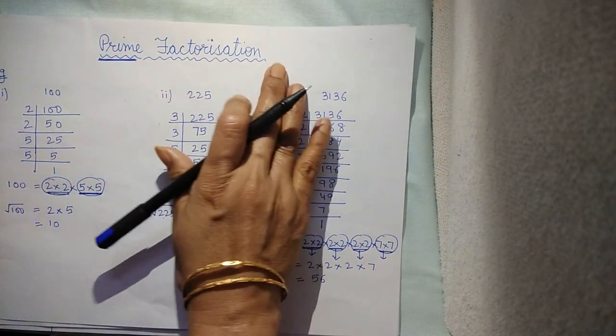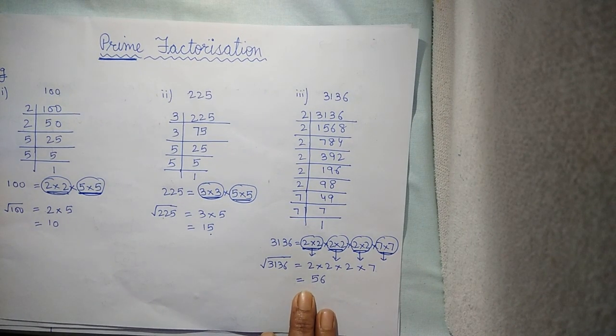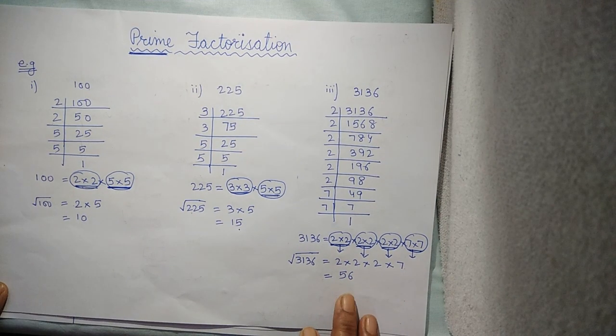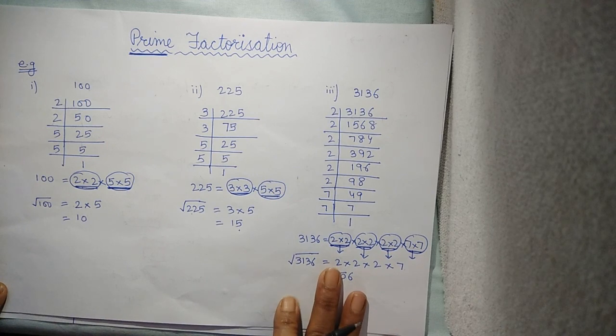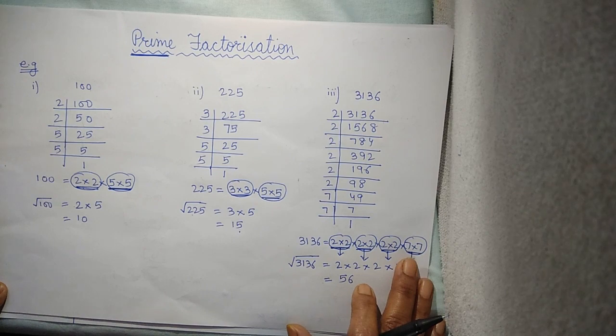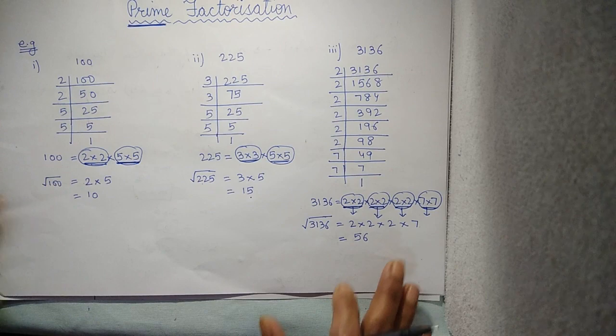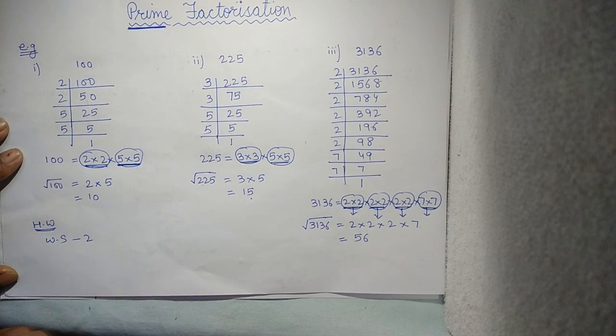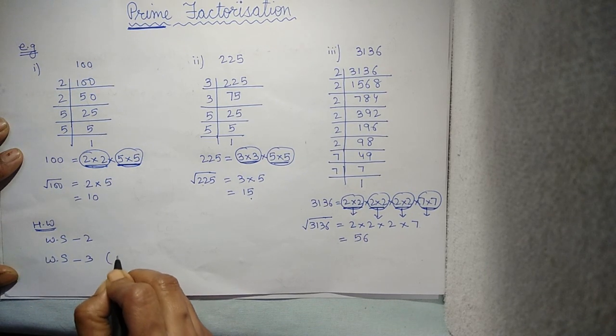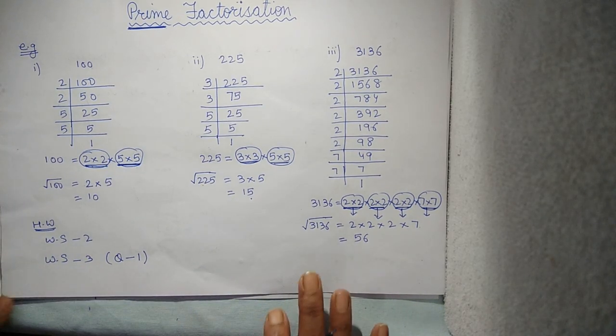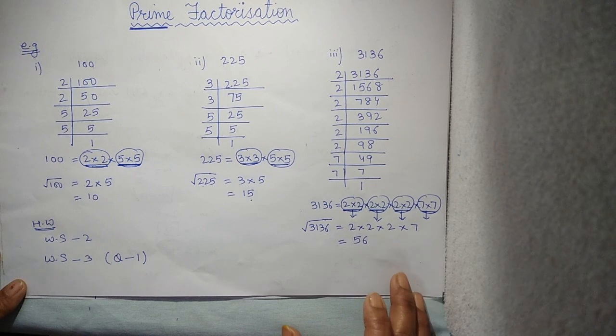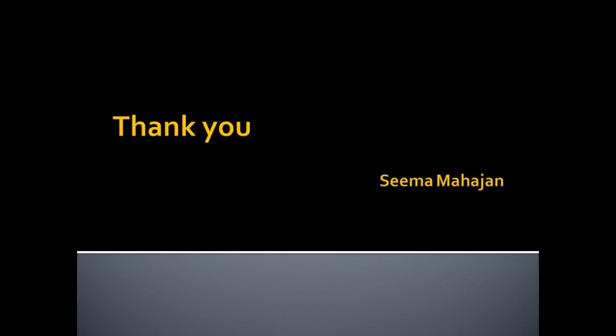With the help of prime factorization method also, you can find out the square root of any given number. But remember that for all numbers, you can't find out the square root unless and until you get the pairing. So, for today's homework, Worksheet 2 and from Worksheet 3 only question 1. The concept of Worksheet 3 we will take it in next video.